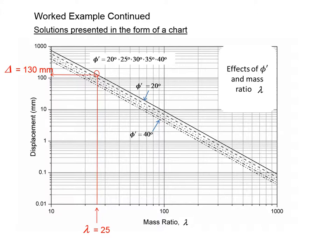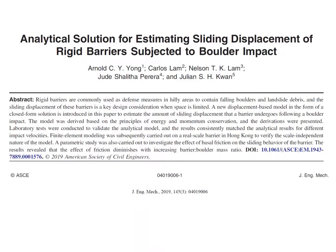The closed form solution has been used to prepare this design chart. It is shown that the amount of sliding displacement is only moderately sensitive to changes in the value of φ'. In contrast, the result is much more sensitive to changes in the mass ratio, which is the mass of the barrier divided by the mass of the impactor.